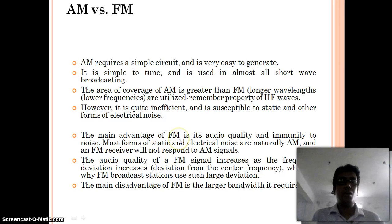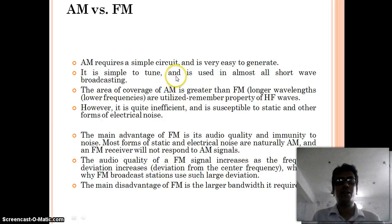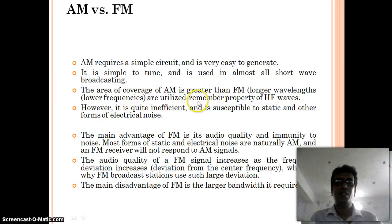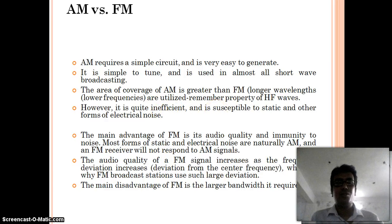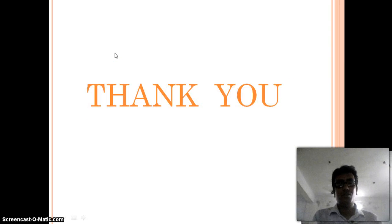Now we will see some of the advantages and disadvantages of AM and FM. AM generation is very simple with a simple circuit, and for shorter distance communication we use AM. But in AM the noise is high, so we can't regenerate the original signal clearly. But in FM, the immunity to noise is very good. However, the bandwidth of FM is larger than AM. Thank you.